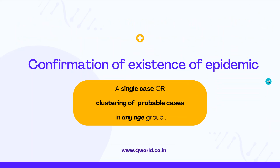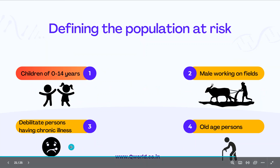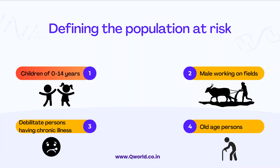Since Chandipura virus is not endemic, even a single confirmed case (with positive lab results) constitutes an epidemic. Clustering of probable cases — four or five cases in an area, usually in the pediatric age group under 14 years — is also called an epidemic. The population at highest risk includes children aged 0 to 14 years, males working in fields, persons with debilitating or chronic illness, and elderly persons.